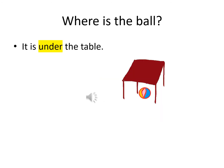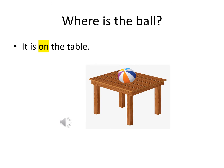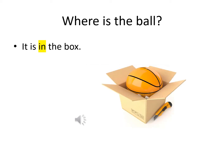Now look at the picture. What can you see? There is a table and a ball. Where is the ball? It's under the table. Where is the ball? It's on the table. Where is the ball? Look at the ball — where is it? It's in the box.